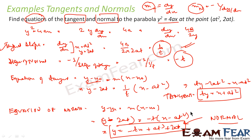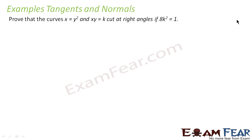I could easily find the equation of tangent and normal. What I did: first I found dy/dx, then I found slope of tangent and slope of normal. Since I know one point, I could easily find the equations of tangent and normal. Let's take one more example on tangents and normals.